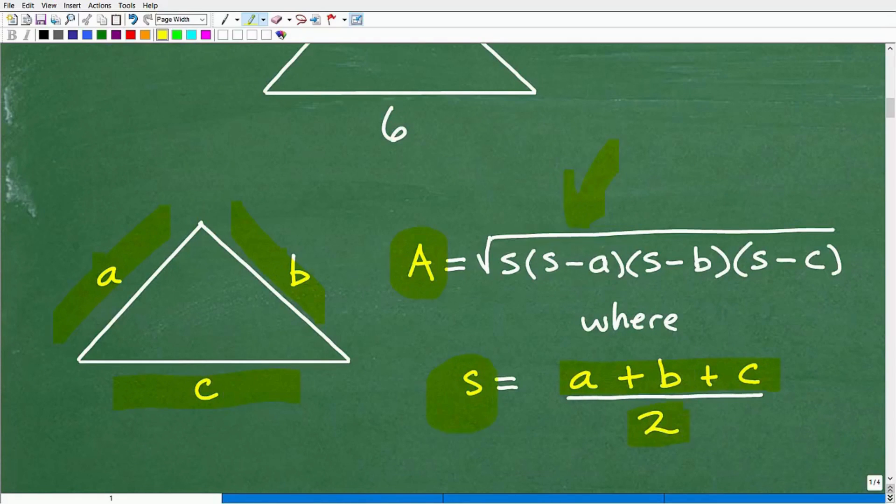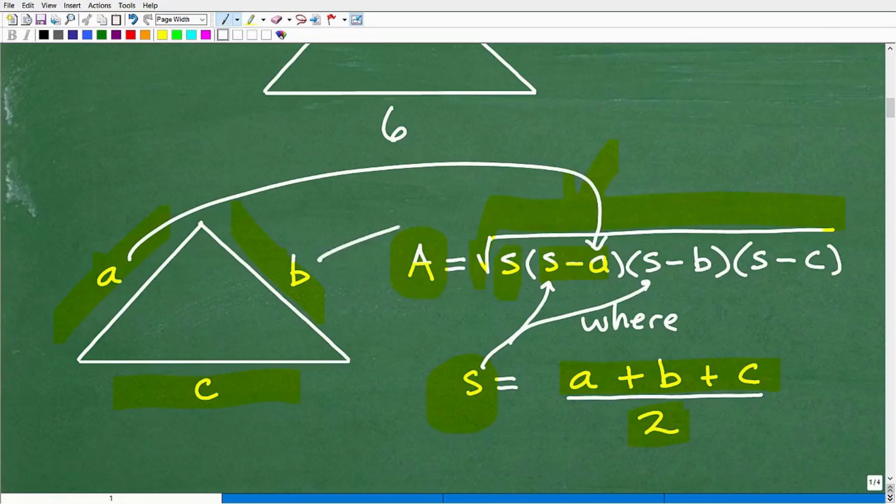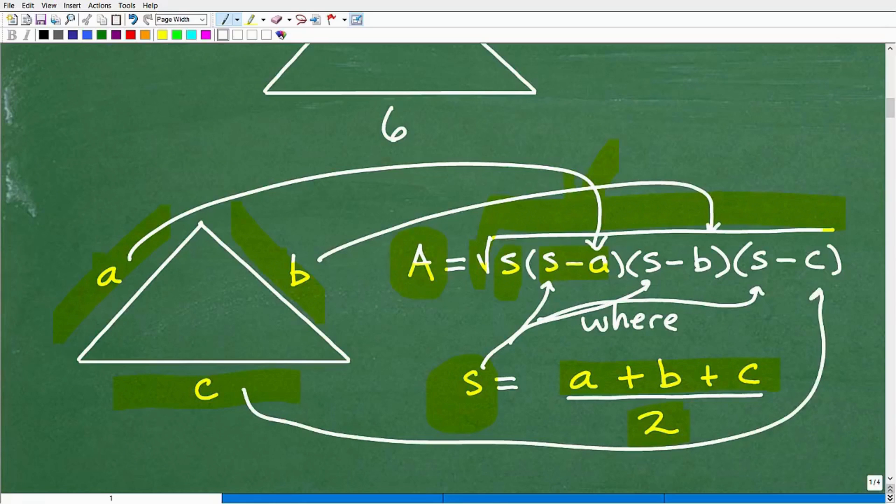So when we calculate this out, this is going to be this number S. Okay. So now that we have this S, we can find the area of this triangle by taking the square root of all of these things right here. We're going to take S, okay, whatever that number is, and we're going to multiply it by S minus A. Okay. So whatever this value is right here, we're going to plug it in right there. We're going to subtract this length right there. Okay. And then we're going to continue to do the same. We'll plug in our S right there and then we'll subtract B and then S right there and we'll subtract C.